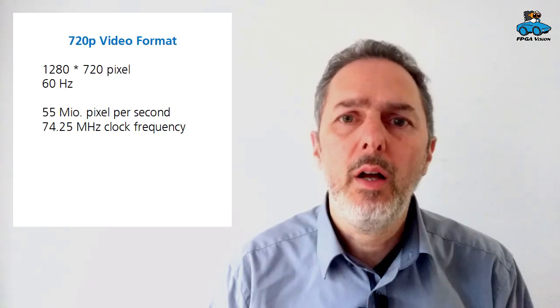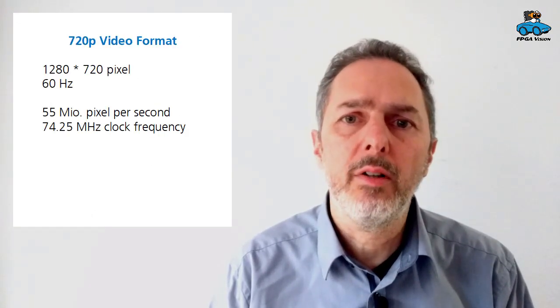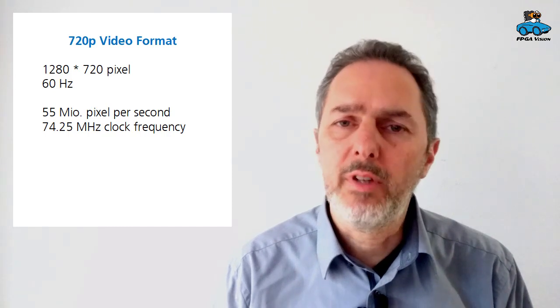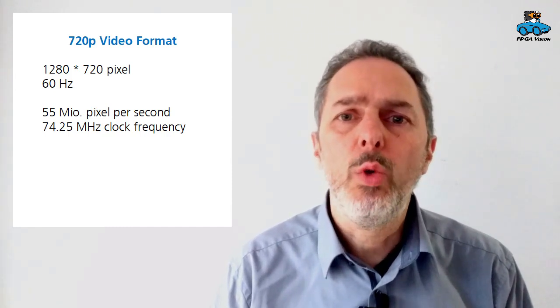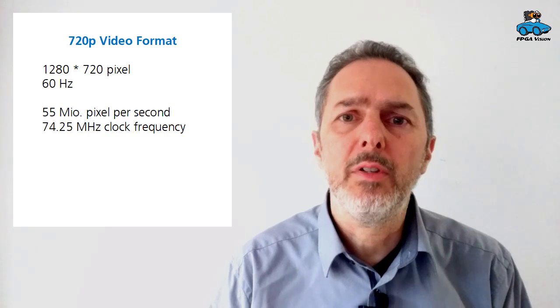These symbols can move, so we have a scene like you see here. The video is in 720p format with 60 hertz, so we have 1280 by 720 pixels and 60 times a second a new frame. This gives around 55 million pixels per second. With some blanking between the lines and frames, we have a clocking frequency of 74.25 megahertz. This is quite a number of samples to investigate, and we will use an FPGA for that.